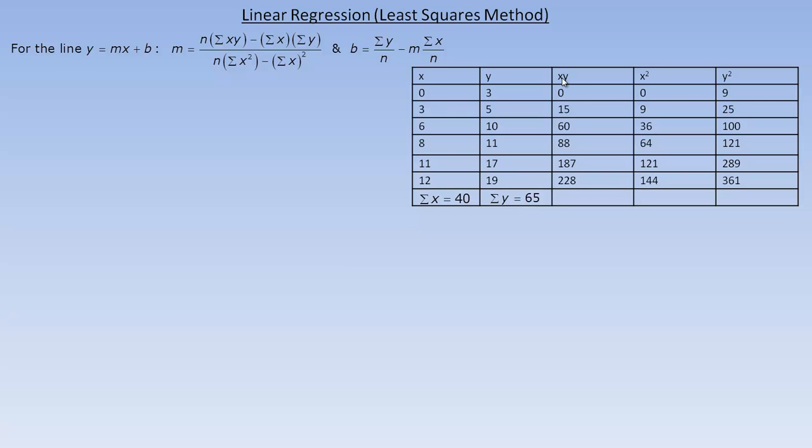This xy means we multiply x by y. I need that in the formula right here. 0 times 3 would be 0. 3 times 5 is 15. 6 times 10 is 60. Down to the bottom, 12 times 19 is 228. We add all those up, and the sum of the xy products is 578.